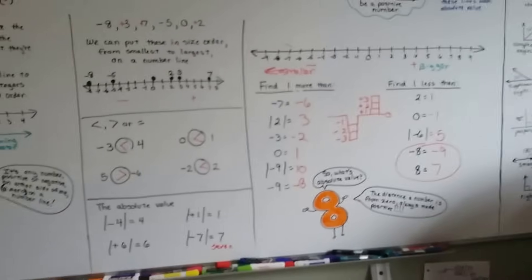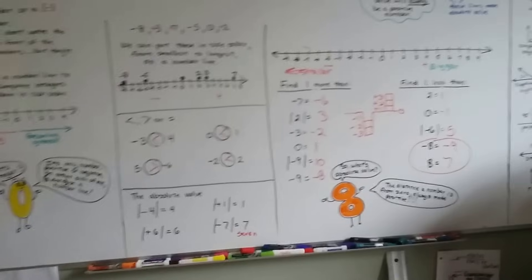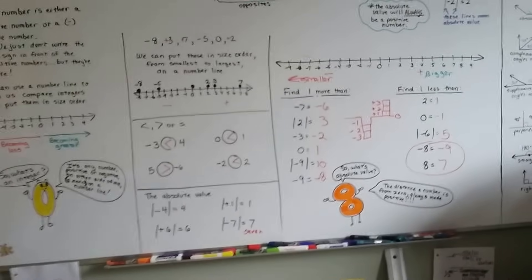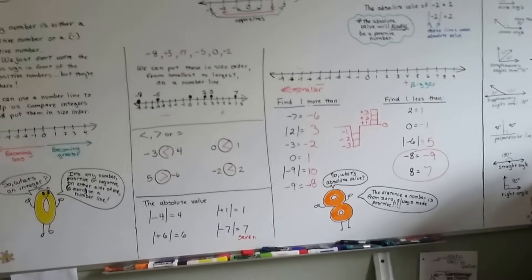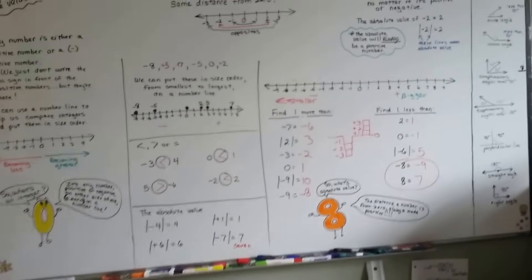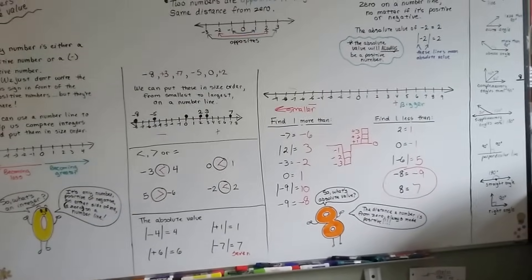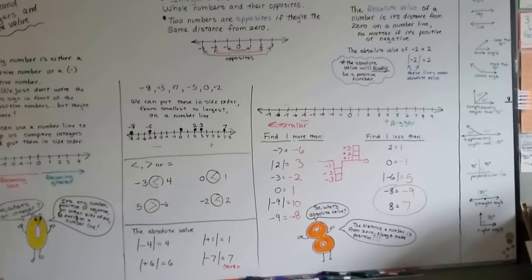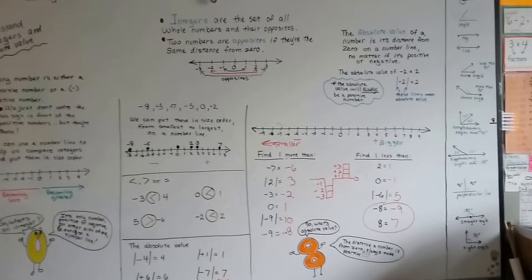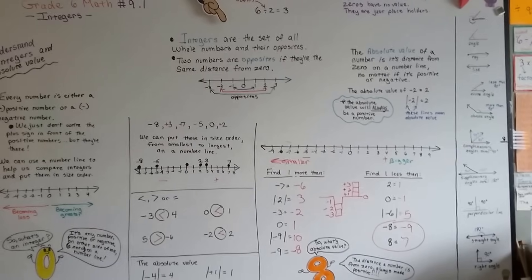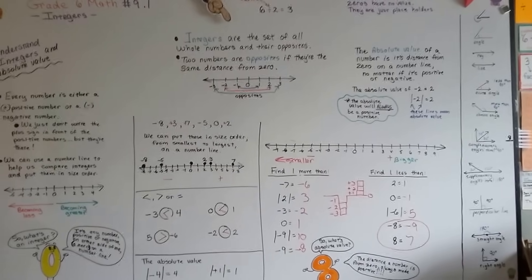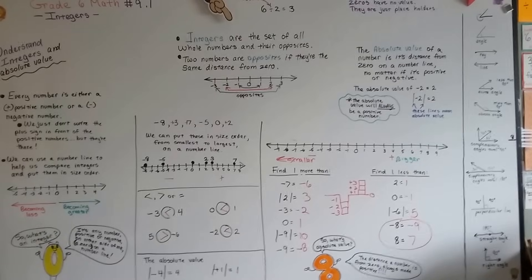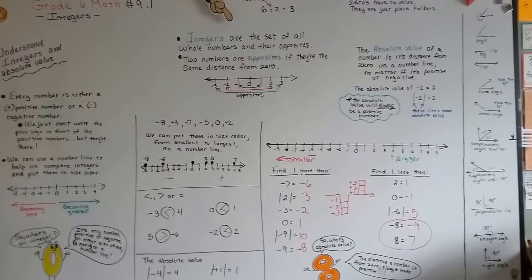So those are integers and that's absolute value. An integer is the set of all the whole numbers and their opposites on either side of zero — negative and positive. Absolute value is how far a number is away from zero, and it always becomes a positive number. See you next video. Bye.